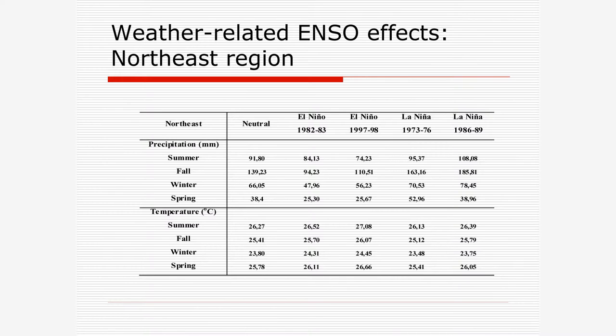What we try to do is evaluate it, to take a look at the general patterns of what happens in these different phases. Here in the first column, you have the average precipitation and temperature in the neutral phases of the ENSO cycle. When we compare the neutral phase, during El Niño phases, like here in the 80s and 90s, we see a decrease in precipitation. During La Niña, we have the contrary, an increase in precipitation in the Northeast. Regarding temperatures, temperatures increase during El Niño and they decrease during La Niña.